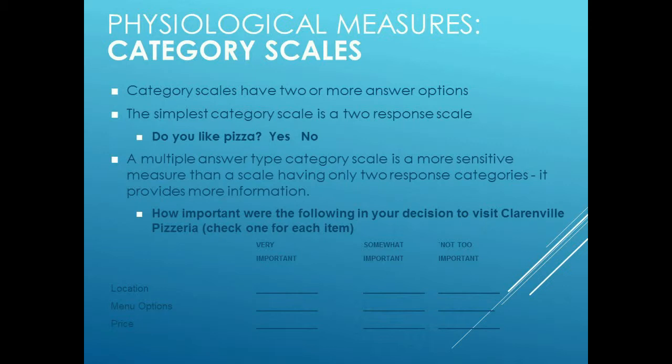For example, a simple category scale might ask: 'Do you like pizza? Yes or no?' A more intricate category scale might ask: 'How important was each of the following in your decision to visit Clarenville Pizzeria?' — rating location, menu options, and price each as very important or not very important. What we're looking at is trying to assess where people fall along a continuum of questions.